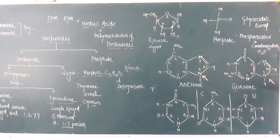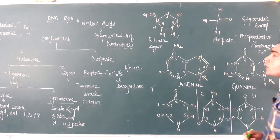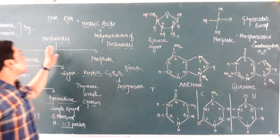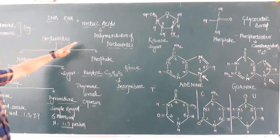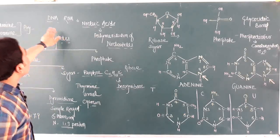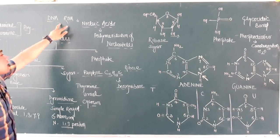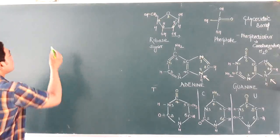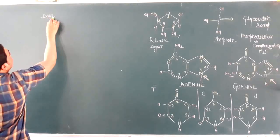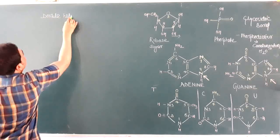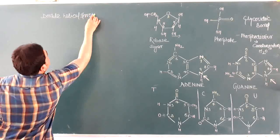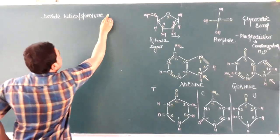Now that we are aware of how nucleotides are formed, their polymerization takes place, leading to the formation of nucleic acids in the form of DNA and RNA. Now we are going to discuss the double helical structure of DNA.